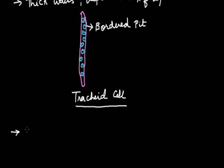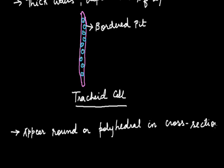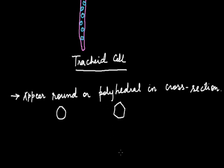Now coming to the other properties of the tracheids. They appear rounded or polyhedral in the transverse section or cross section. This means when we cut the transverse section of the tracheids element it will appear either rounded like this or polyhedral like this. So this is the cross section of the tracheids.